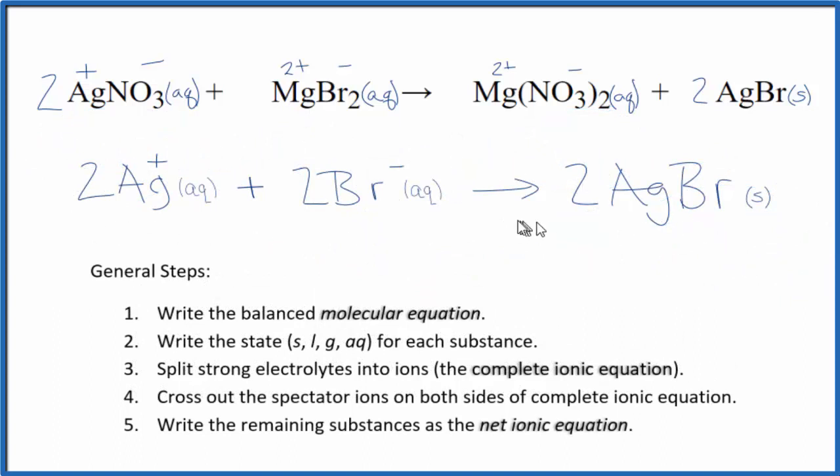So this is our net ionic equation for silver nitrate plus magnesium bromide. When we have a coefficient in front that we can reduce to a lower number, we should do that. So this 2, 2, 2, that could just be 1, 1, 1, and we don't write the ones.